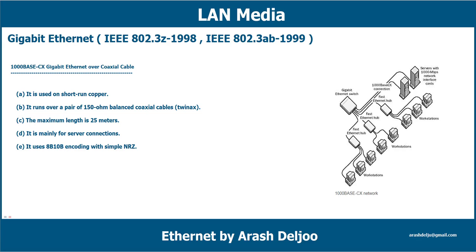Let's review the 1000Base-CX standard. It is used on short-run copper and runs over a pair of 150-ohm balanced coaxial cable. The maximum length is 25 meters. It is mainly for server connections.